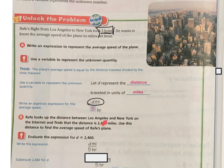Raf looks at the distance between Los Angeles and New York on the internet and finds that the distance is 2,460 miles. Use this distance to find the average speed of Raf's plane.